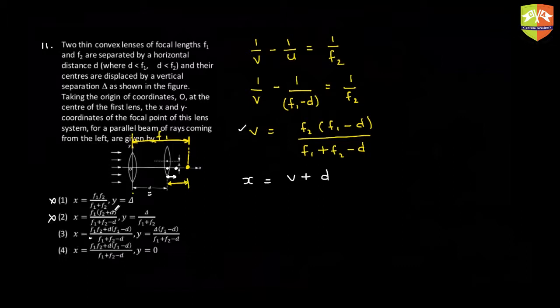Playing smart: since the lens is displaced vertically, the y-coordinate of the image will not remain zero. So you can mark option 3 and move ahead — that's taking a calculated risk. But if you actually want to derive the y-coordinate, here's how.